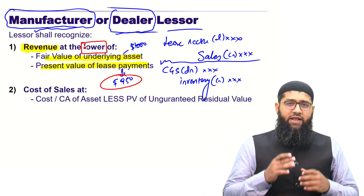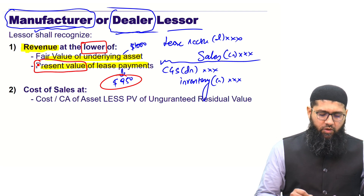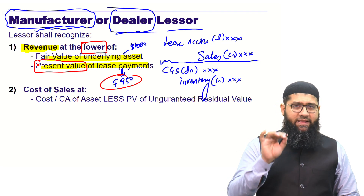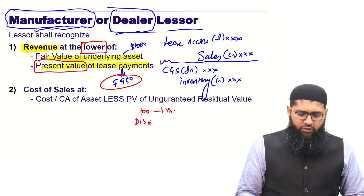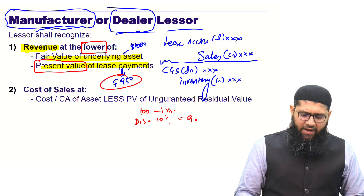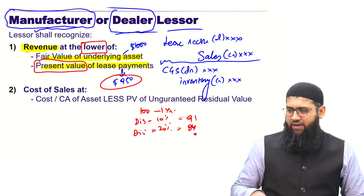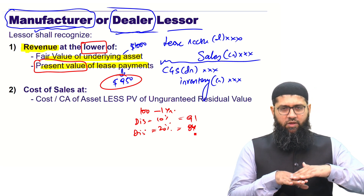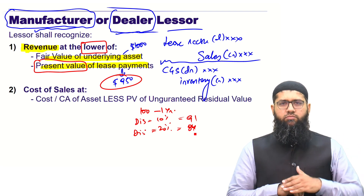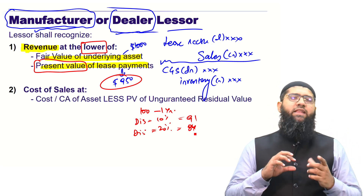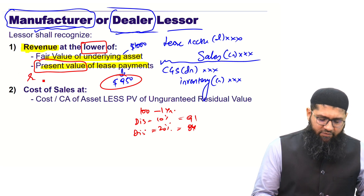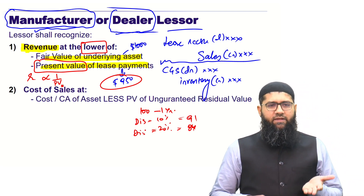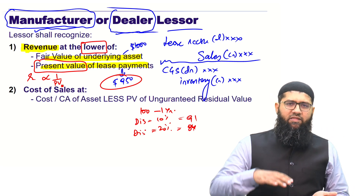There is one more thing to understand regarding the present value. When calculating the present value of lease payments: if you have $100 in one year and discount it at 10%, you get approximately $91, but if you discount at 20% you get less — maybe $84. So if the discount rate increases, the present value goes down — they have an inverse relationship. If the discount rate increases, present value decreases; if the discount rate decreases, present value increases.